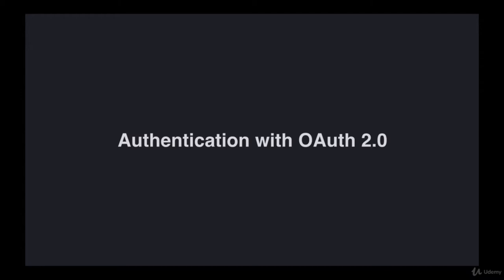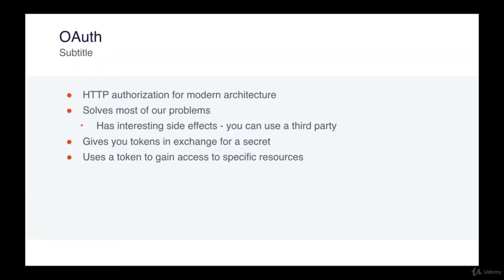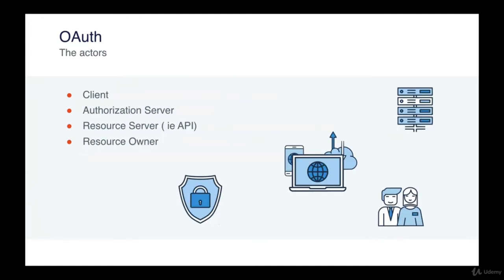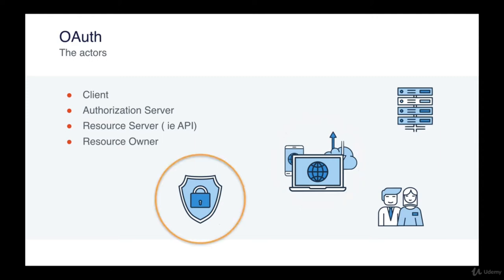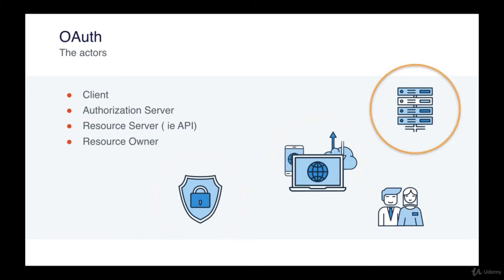This is where OAuth comes into play. With OAuth, you will have an authorization server that will give you tokens that can easily be passed around. This solves our problem and comes with a nice side effect — you can delegate your authorization to a third party server. In our case, we will be using Auth0 for this. When looking at OAuth, there are different actors involved in the process. First of all, you have your client, which is typically your browser trying to access a resource, but could be a mobile device, a smartwatch, or anything trying to access some data. You also have an authorization server that gives you tokens to validate access, a resource server which is your API, and a resource owner which is typically the end user.